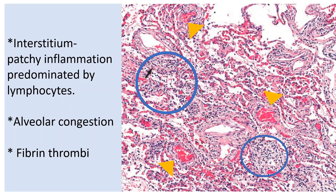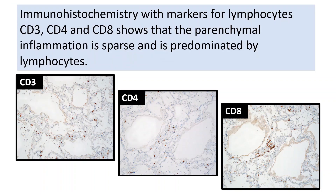Similarly, there was patchy inflammation within the interstitium which was predominated by lymphocytes. The prominent alveolar congestion is also evident in this photomicrograph, shown with the yellow arrow. As is common in diffuse alveolar damage, thrombi were noted within few small pulmonary artery branches. Immunohistochemistry was done to characterize the inflammatory infiltrate. The results showed a sparse infiltrate of CD3-positive T lymphocytes highlighted in brown. There were also CD4 and CD8 lymphocytes with a mild predominance of CD8-positive T cells. CD20-positive B cells were sparse in this case.